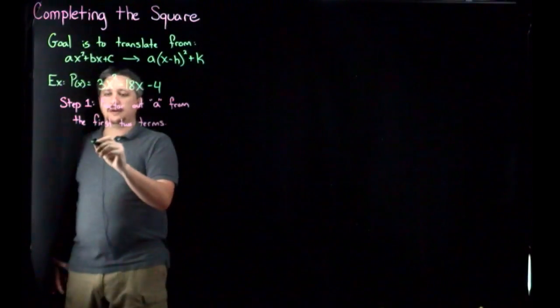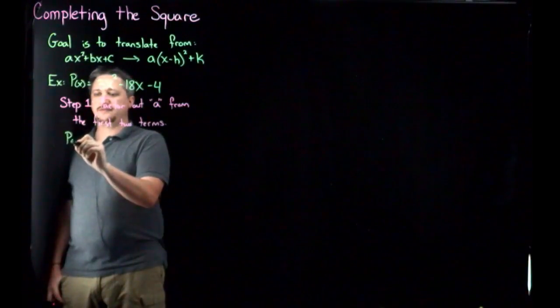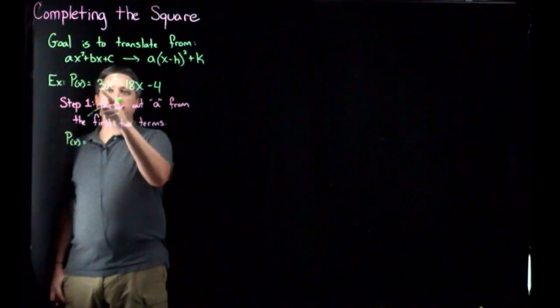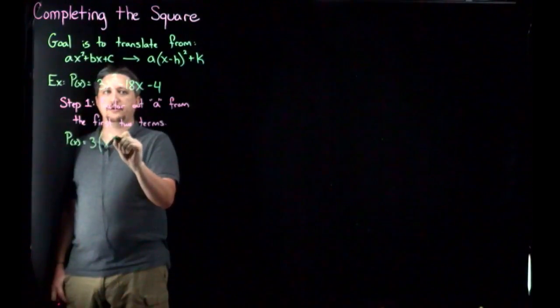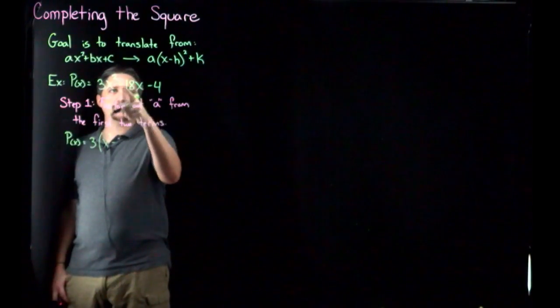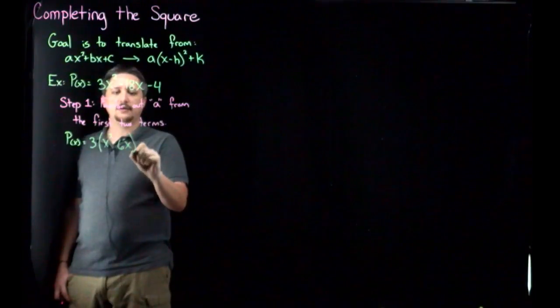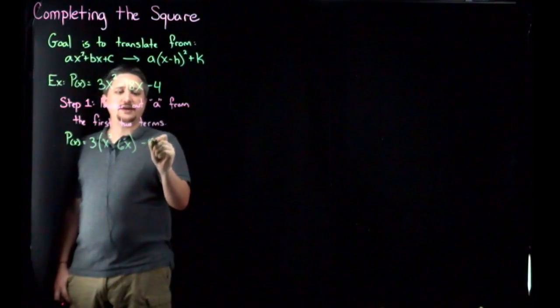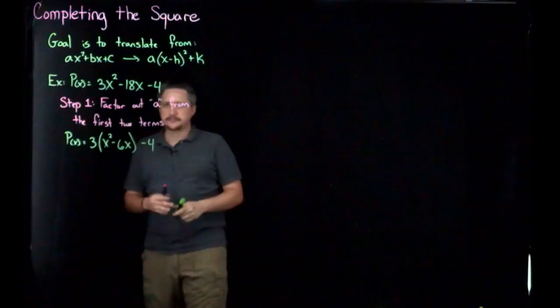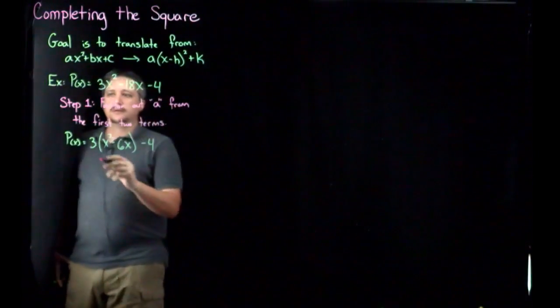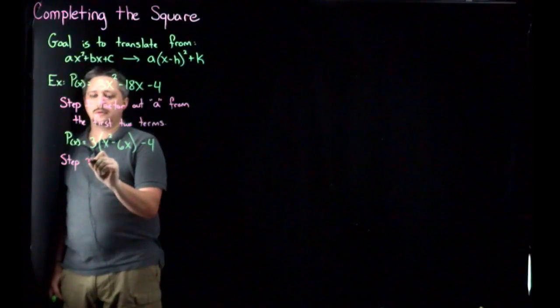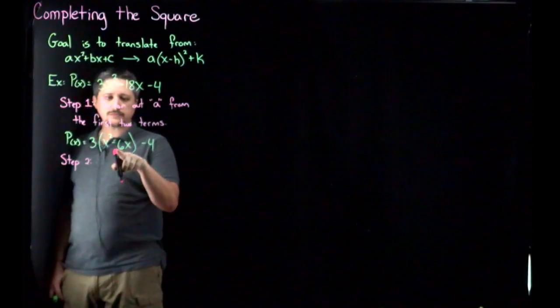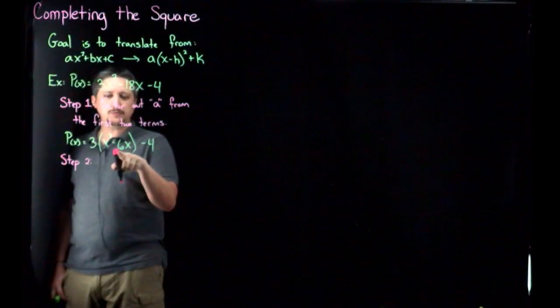So in this case, I'm going to have p of x equal. So I'm factoring out the three. I get x squared minus, so I'm factoring out the three from here, so I'm going to get minus six x. But I can just leave that hanging off at the end over there.